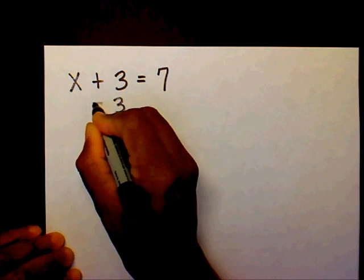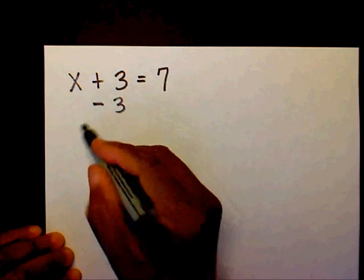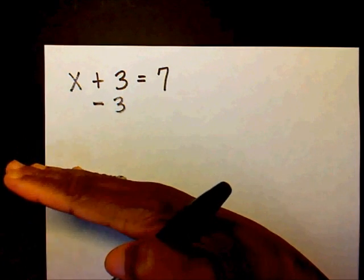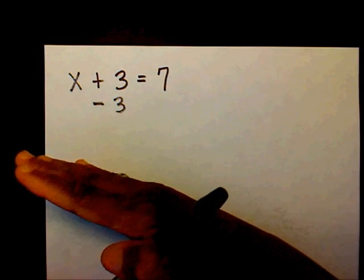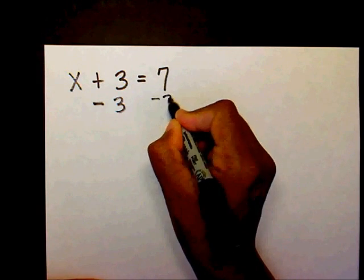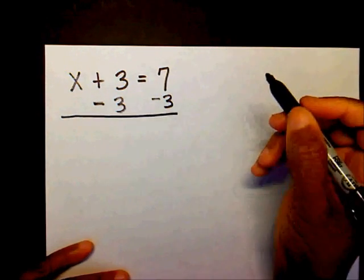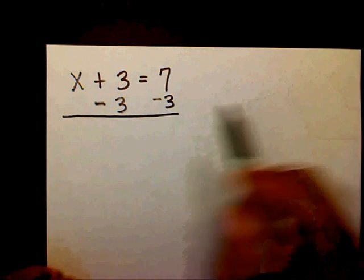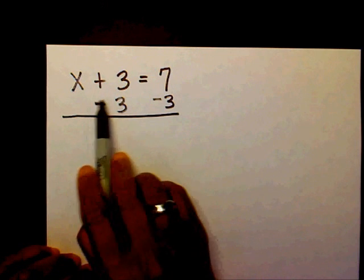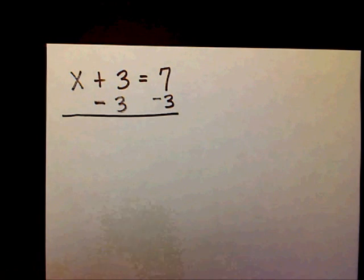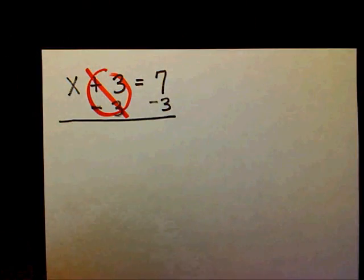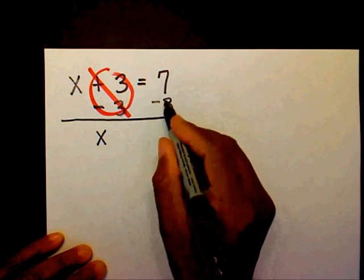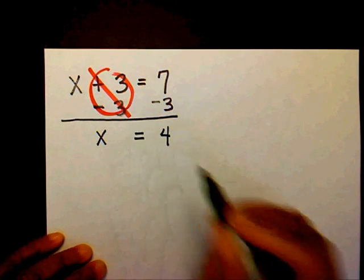I'm going to subtract 3, not on one side. If I just subtracted on this side, my scale is going to tip. I have more on my right side than my left side. So to bring that scale balanced again, I'm going to have to subtract 3 on the other side of the equation. If you have a positive 3 and a negative 3, they create a zero pair. I'm left with x on my left-hand side and 4 on my right-hand side, and both sides are equal.